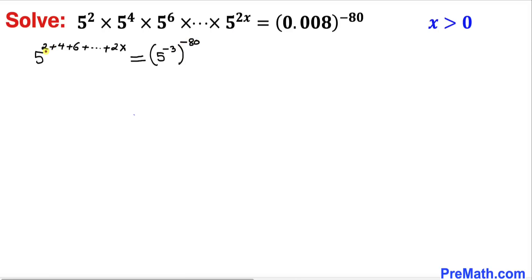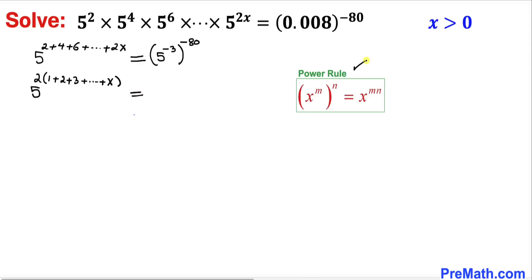Now let's focus on the exponents on the left hand side. We can see that 2 is common, so the left hand side can be written as 5 to the power of 2 times the quantity 1 plus 2 plus 3 plus all the way to x. On the right hand side, we apply the power rule and multiply the nested exponents, giving us 5 to the power 240.